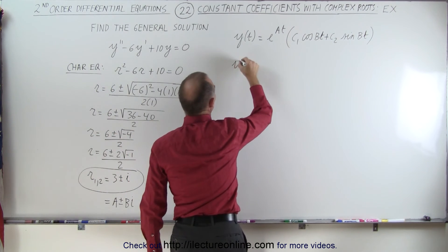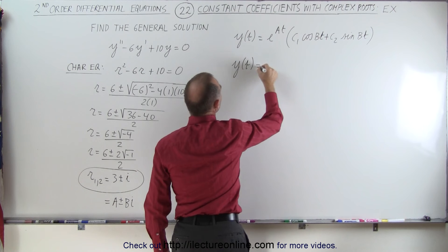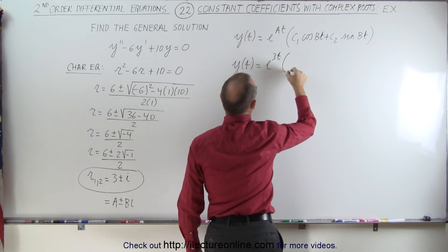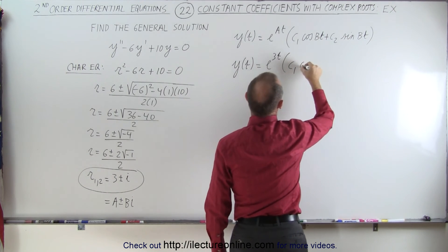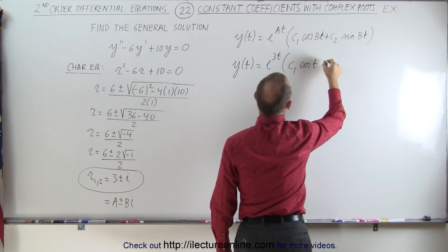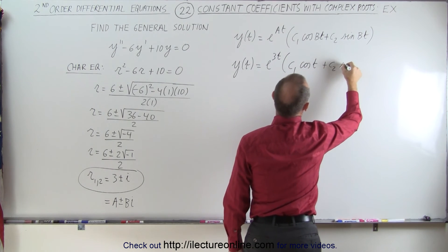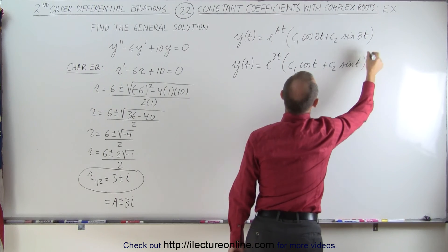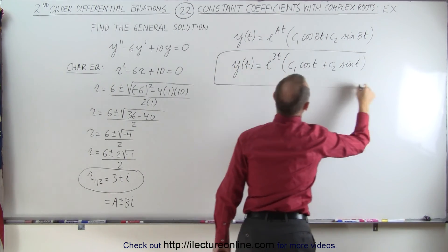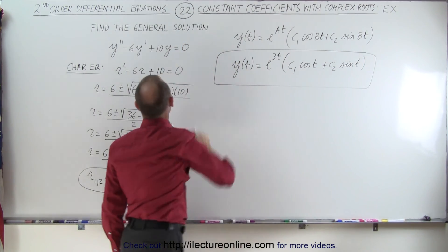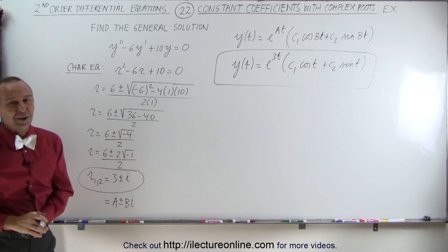we get the general solution to be Y of T is equal to E to the 3T times C1 cosine of T plus C2 sine of T. And that's the general solution to this differential equation. And that's how it's done.